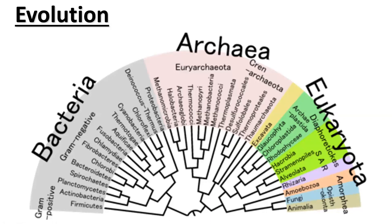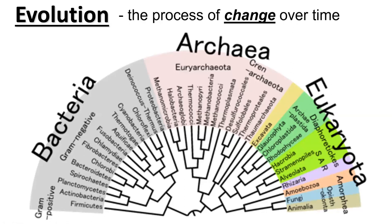Now let's get into the actual theory of evolution — the idea of how organisms have come to be the way that they are in our living world. Evolution is just the process of change over time. And time is usually deep time — we're talking thousands and millions of years and thousands and millions of generations of a species to see changes in those species over time.